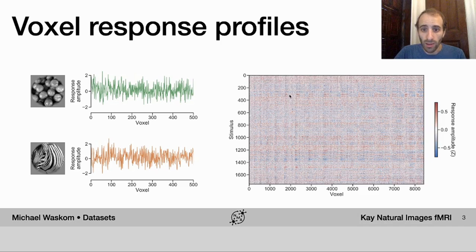And so the way the data that you'll be working with are organized is a 2D array or matrix where the rows of the matrix correspond to the individual stimuli or images that the subject saw, and the columns of the matrix correspond to the voxels in visual cortex. So each entry in this matrix tells you about a particular voxel's response to a particular stimulus image.